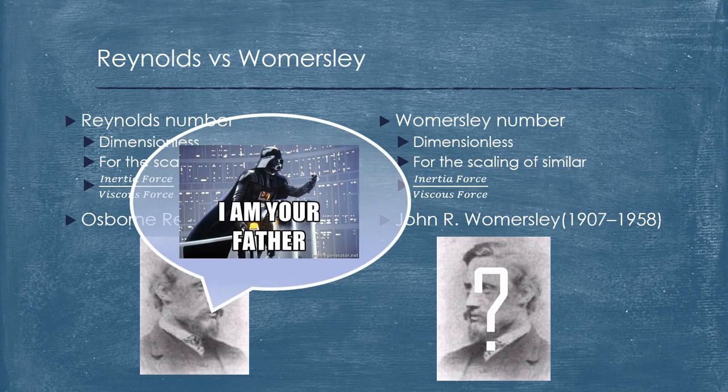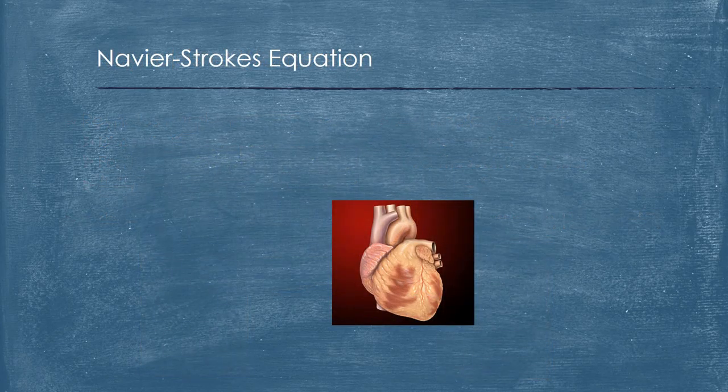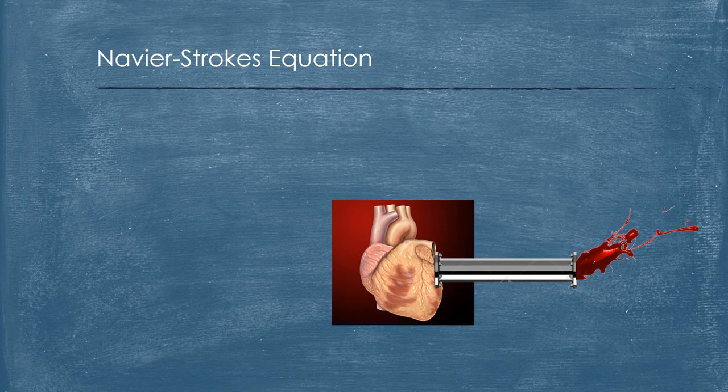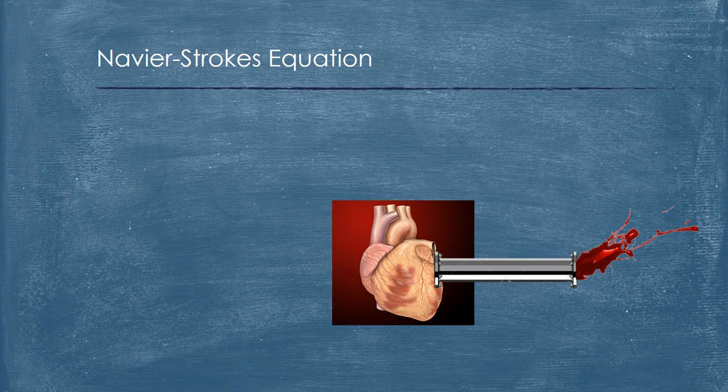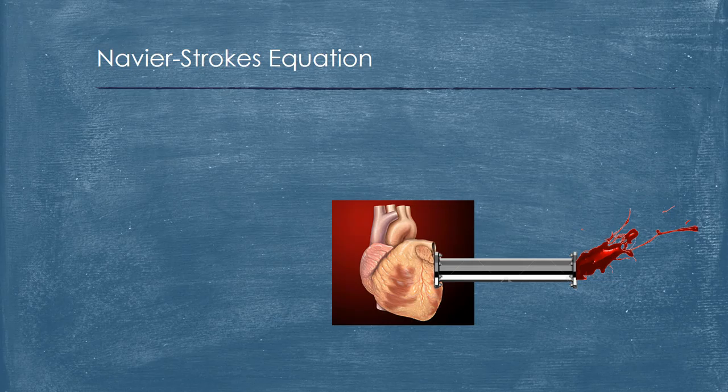To answer this question, we can imagine our heart is connected to a rigid pipe, and surely our blood will flow out, and you would like to know how fast the blood is going out. And we can solve this question with the Navier-Stokes equation.